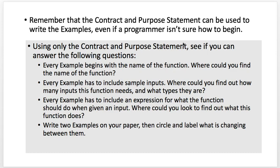You don't have to figure out everything from the beginning — just do the steps in order and use each step to figure out the next. Using the contract and purpose statement you wrote on page 13, write two examples and then circle and label what is changing between them. Every example begins with the name of the function, includes sample inputs whose types come from the domain, and has an expression for what the function should do with that input. Pause now and do that.